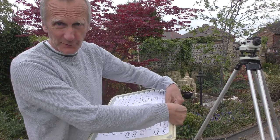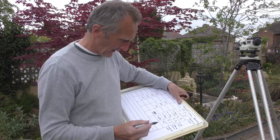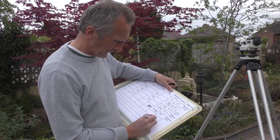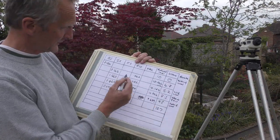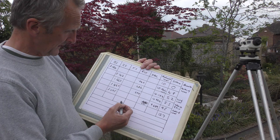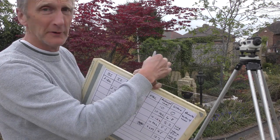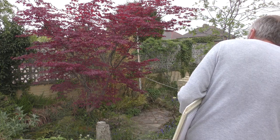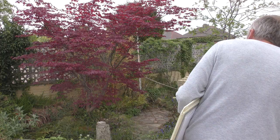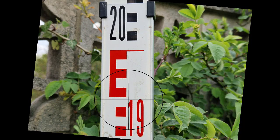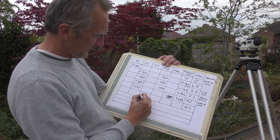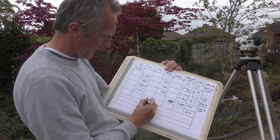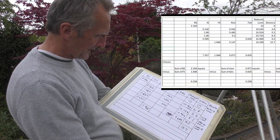On to the last one: the distance is 12.7 meters — written in. I've just got to do the foresight now, and that is 1.948. I write it in the foresight column and once again I've got to take that from the value above.